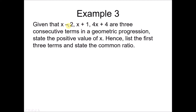Example 3: given that (x−2), (x+1), and (4x+3) are three consecutive terms in a geometric progression, find the positive value of x, then list the first three terms and state the common ratio. Since this is a GP it has a common ratio, meaning the ratio between consecutive terms is constant. So (x+1) divided by (x−2) equals (4x+4) divided by (x+1). We cross-multiply and expand to find x.